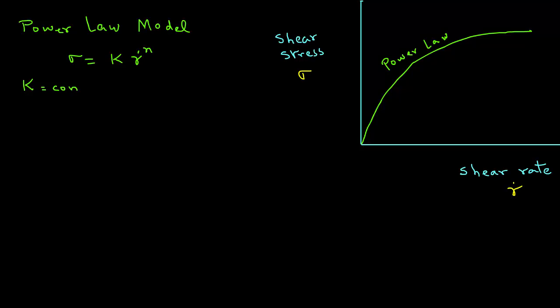Note that sigma is the shear stress and gamma dot is the shear rate. K is called the consistency coefficient and n is the flow behavior index.